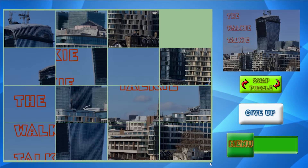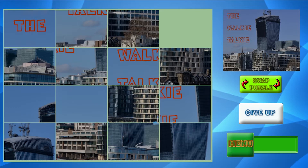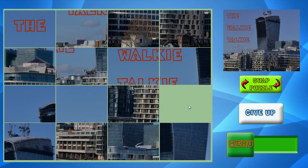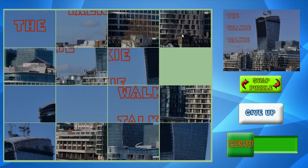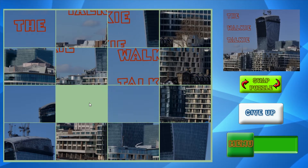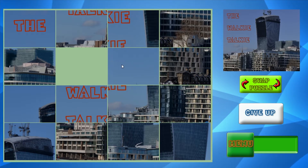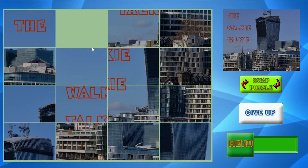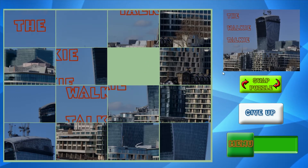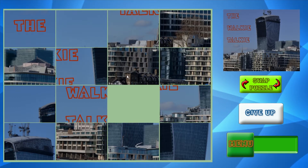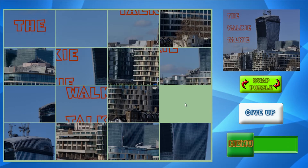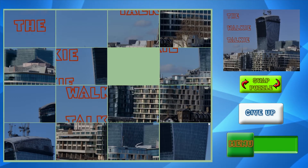Press Start — all of the puzzles are mixed up and now we have to complete the picture shown on the right-hand side. To move a puzzle, simply press on the piece you want to move and it will slide to the empty space. By moving the pieces we need to reconstruct the picture.